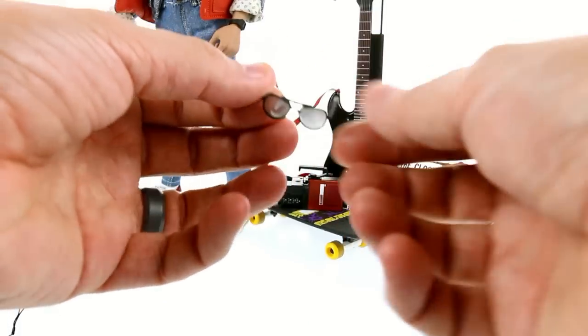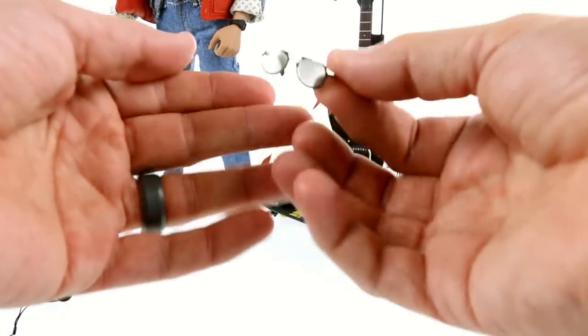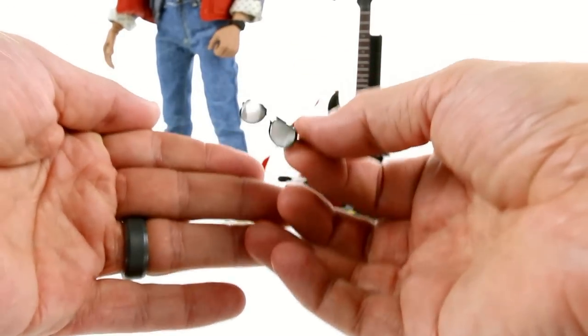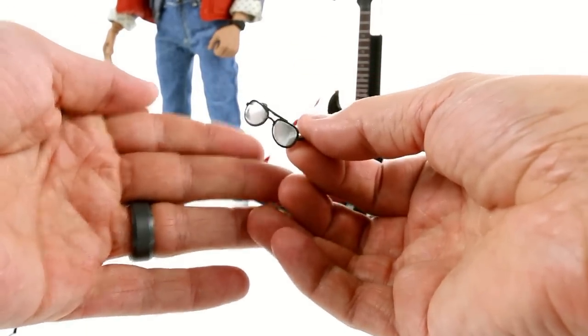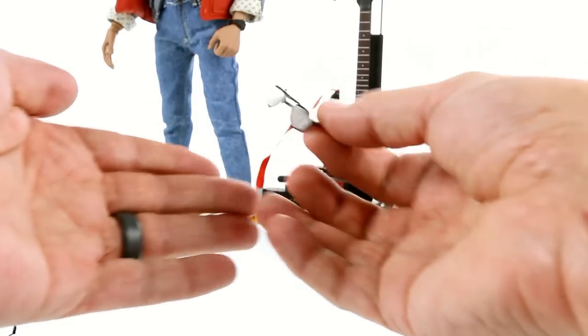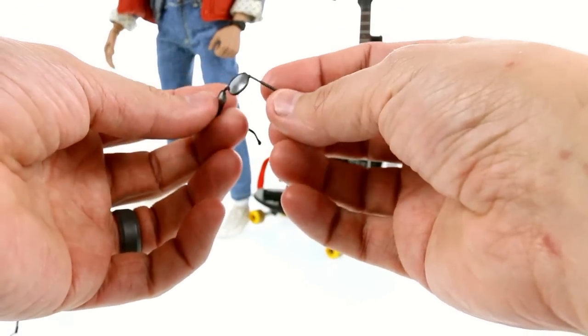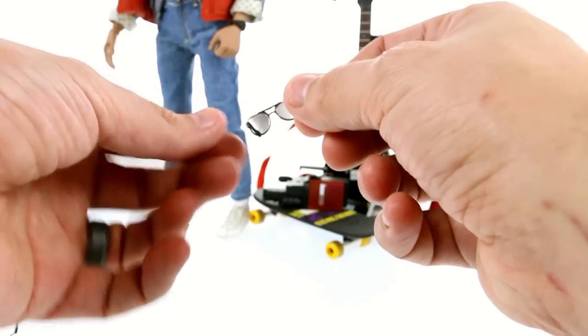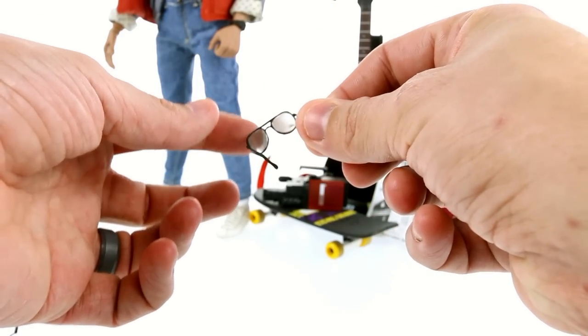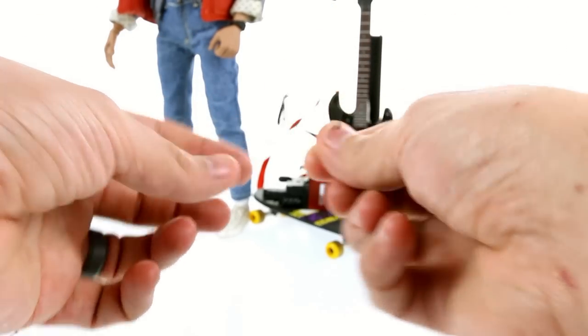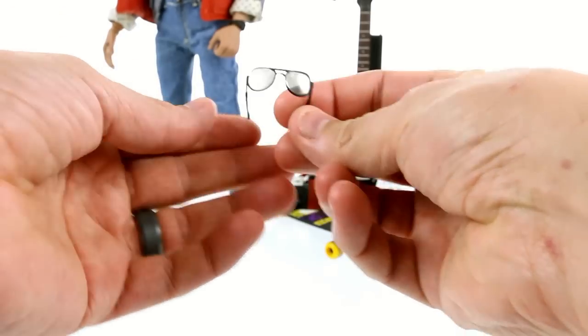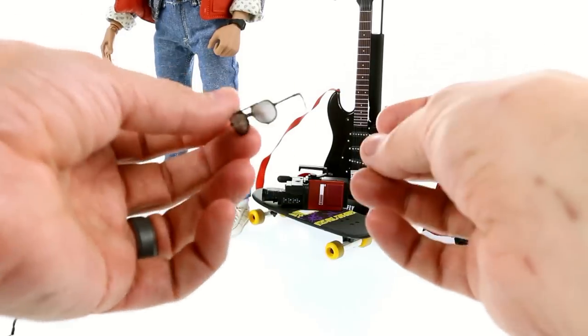He also does come with a pair of sunglasses. It specifically says in the instructions that these are not meant for wearing in terms of covering his eyes. These are just meant to replicate a specific look from the film. So I'm glad that they included them. They are very simple, they're not overly spectacular or anything, and you really can't even see through the actual lenses. But they are not meant to be worn, it's just to enhance one of his poses.